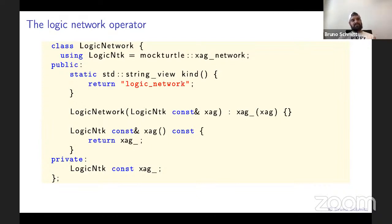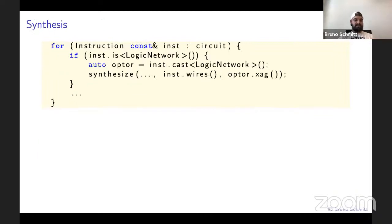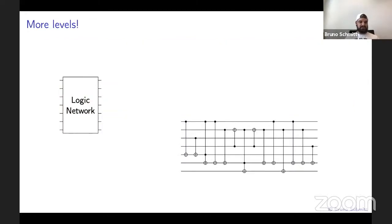As we have seen, creating a logic network operator is fairly trivial. Here you can see how a logic network class operator class might look like. Observe that we also use one of the other LSI libraries to represent the logic network. We use mockturtle to this end. Of course, after adding this operator to the circuit and doing some manipulations with it, at some point we will need to compile it. This code snippet shows pretty much how a synthesis pass would look like. You can iterate over your circuit, and when you do so, you visit one instruction at a time in topological order. You can poke the instruction to see what operator is inside it, and if it is the operator you're looking for, you can cast it and then use it.